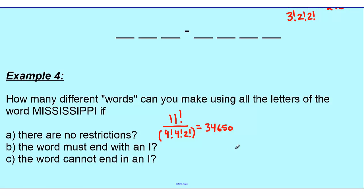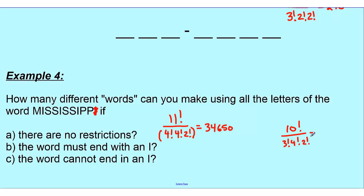What if the word must end in the letter I? Just like the Toronto example, we anchor one I at the end and rearrange the remaining ten letters. That's 10 factorial ways, but now only three I's are repeating, plus the four S's and two P's. So 10 factorial ÷ (3 factorial × 4 factorial × 2 factorial) = 12,600 ways.